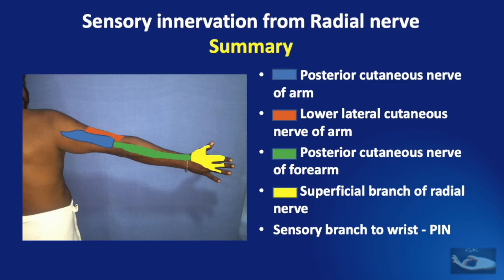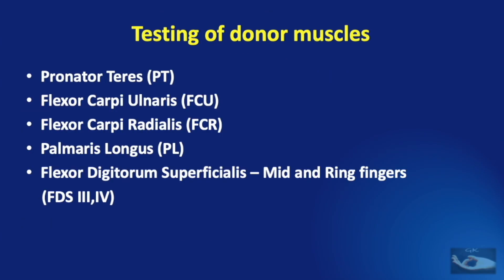The sensory examination of the radial nerve is done by testing sensation along the posterior cutaneous nerve of the arm territory, the lower lateral cutaneous nerve of the arm, the posterior cutaneous nerve of the forearm, and the superficial branch of the radial nerve, as shown in the diagram. In examination of radial nerve palsy, we also need to test the donor muscles in case we need to do a tendon transfer.